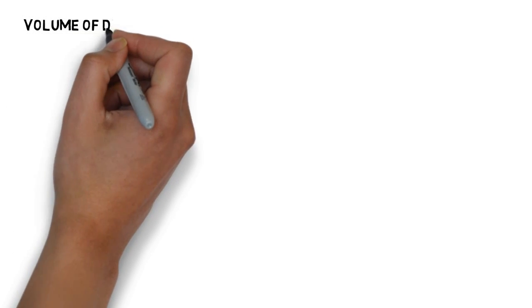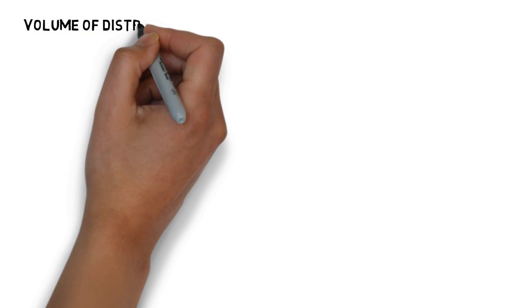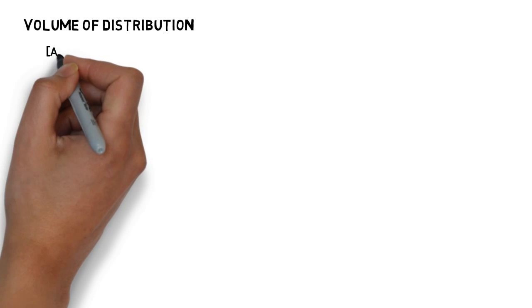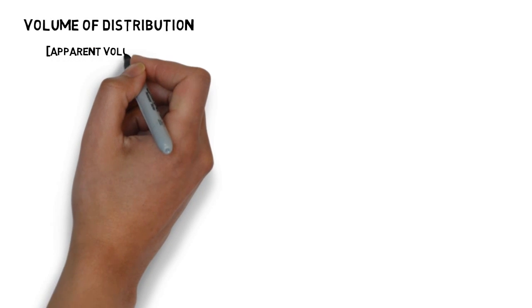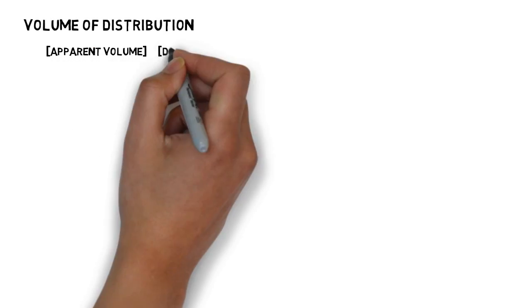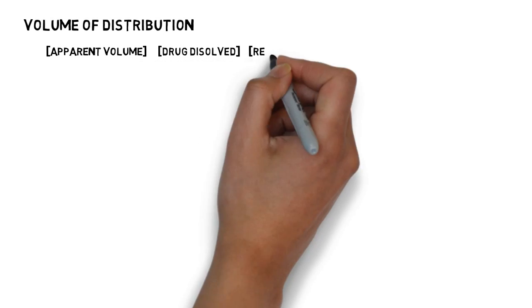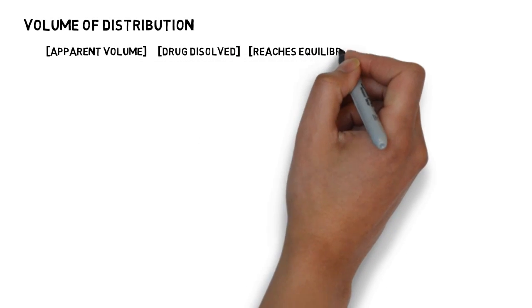I'm going to be explaining the concept of volume of distribution of drugs today. The volume of distribution of drugs is basically the apparent volume in which the drug gets dissolved after it reaches a state of equilibrium in the body.